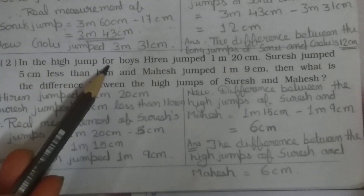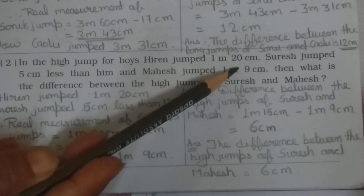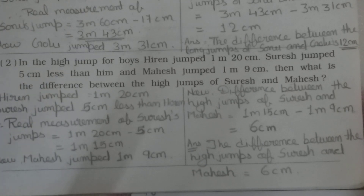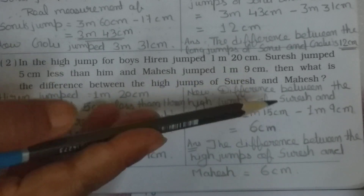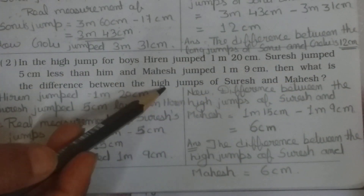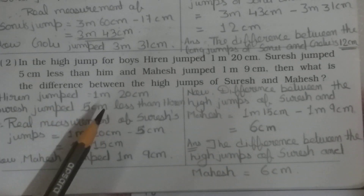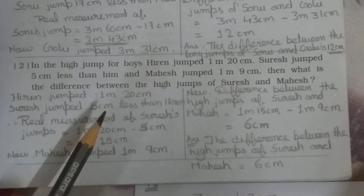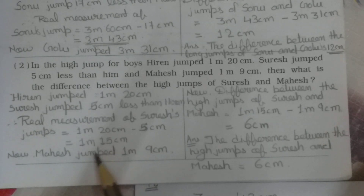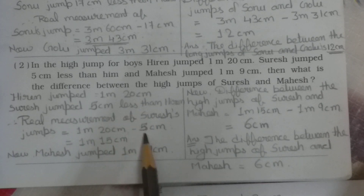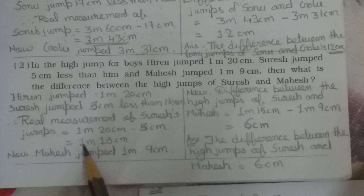Second one: In the high jump for boys, Hiran jumped 1 meter, 20 centimeter. Suresh jumped 5 centimeters less than Hiran. Mahesh jumped 1 meter, 9 centimeter. Find the difference between the high jumps of Suresh and Mahesh. Suresh's real measurement: 1 meter 20 centimeter minus 5 centimeter equals 1 meter, 15 centimeter.